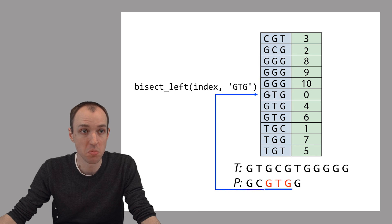So if we wanted to find all the places where GTG occurs, we could use bisect_left. It would point us here and we could look up this offset, then keep going and find another GTG and find this offset, and keep going and find another GTG and find this offset. So we would report that GTG occurs at offsets 0, 4, and 6.